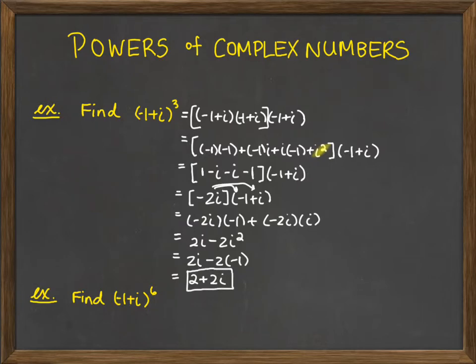That took quite some time. So what if instead we needed to find negative 1 plus i to the 6th? We'd have to multiply it by itself six times — there has to be a better way. That's what motivates the following formula.